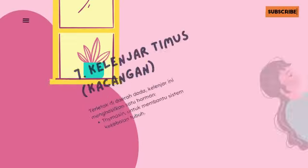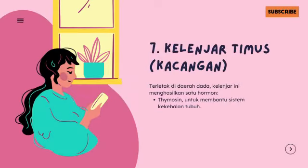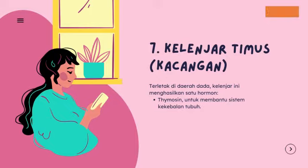Kelenjar timus terletak di daerah dada. Kelenjar ini menghasilkan satu hormon yaitu timosin, untuk membantu sistem kekebalan.